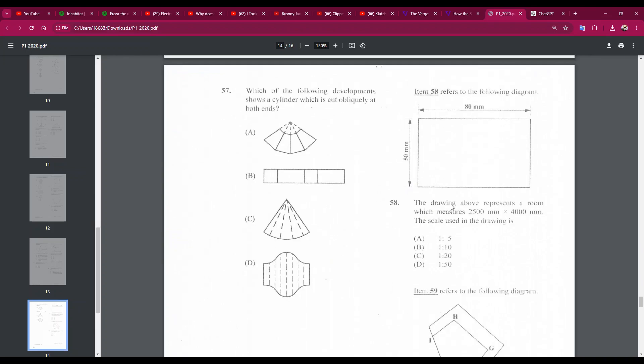Number 58: the drawing above represents a room which measures 2,500 by 4,000 millimeters. The scale used in the drawing is... so on the drawing, it's actually 80 by 50, but in reality, it's 2,500 by 4,000. The scale would have to be 1 to 50 because 50 by 50 is 2,500 and 50 by 80 is 4,000.